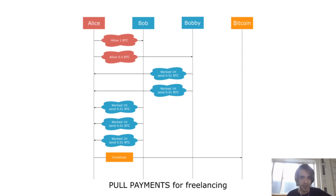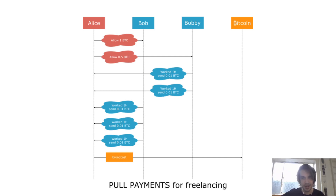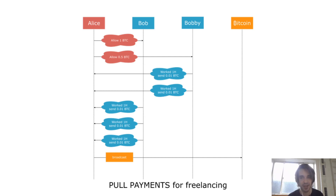So what about, instead of push payments, having the same model as Amazon? I recently hired a freelancer on a website called Upwork. The way the model works is you enter your credit card and say, okay, this freelancer can draw money from me up to, for example, $1,000 per month. The freelancers are basically directly pulling the money out of the payer, which is very good because it takes away all the mental costs the payer has to deal with every time they're sending money.